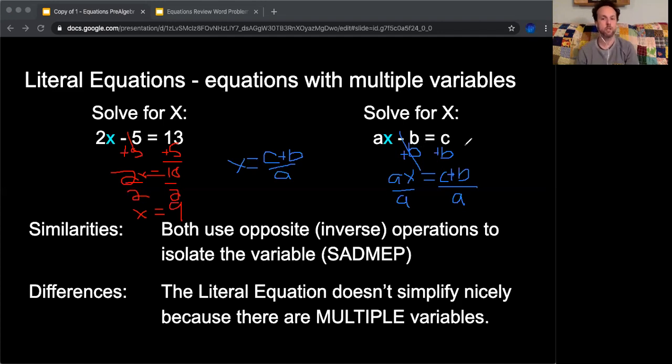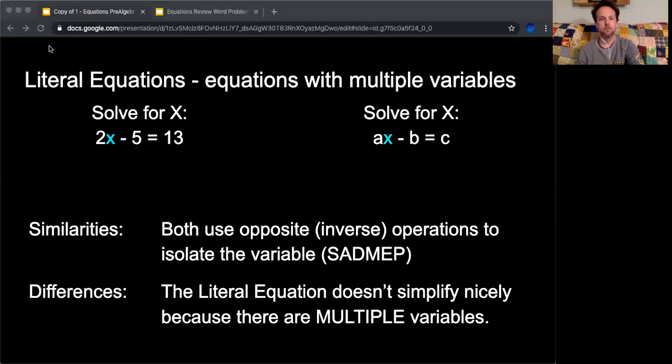And again, it all depends on what variable you're solving for. I could take this same equation and try and say solve for B or solve for A. I would follow the same steps. I would follow the inverse operations to isolate the variable. But depending on what variable I'm solving for, that's going to determine the steps that I follow.